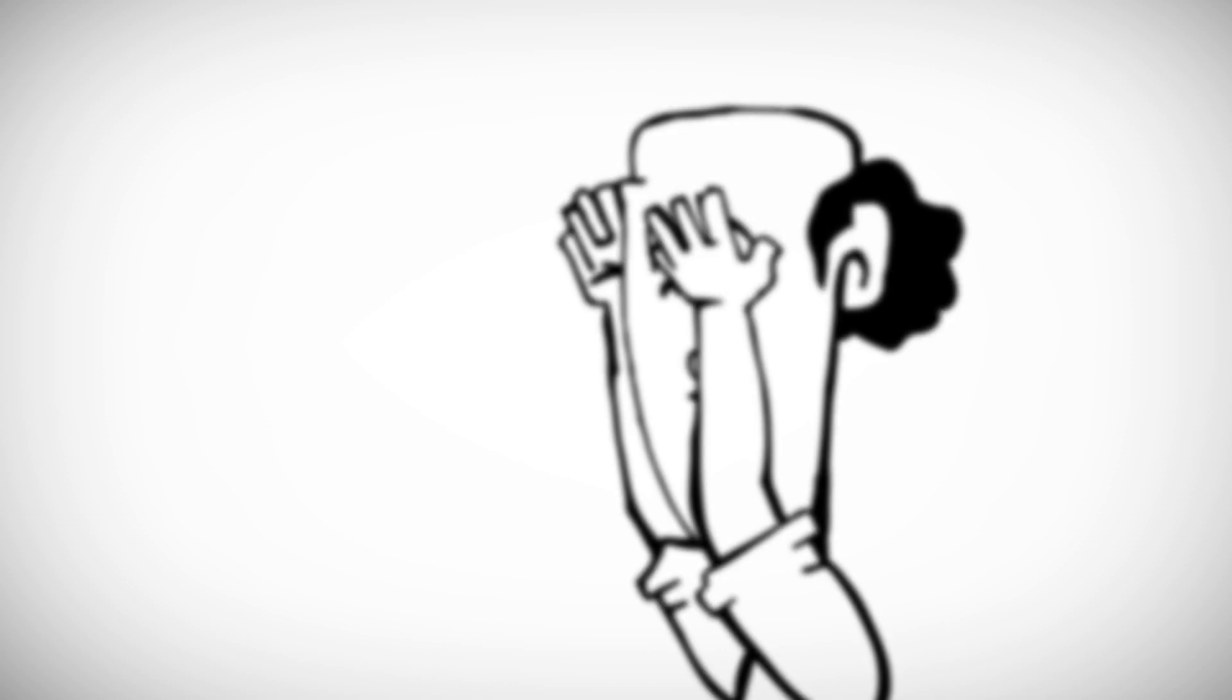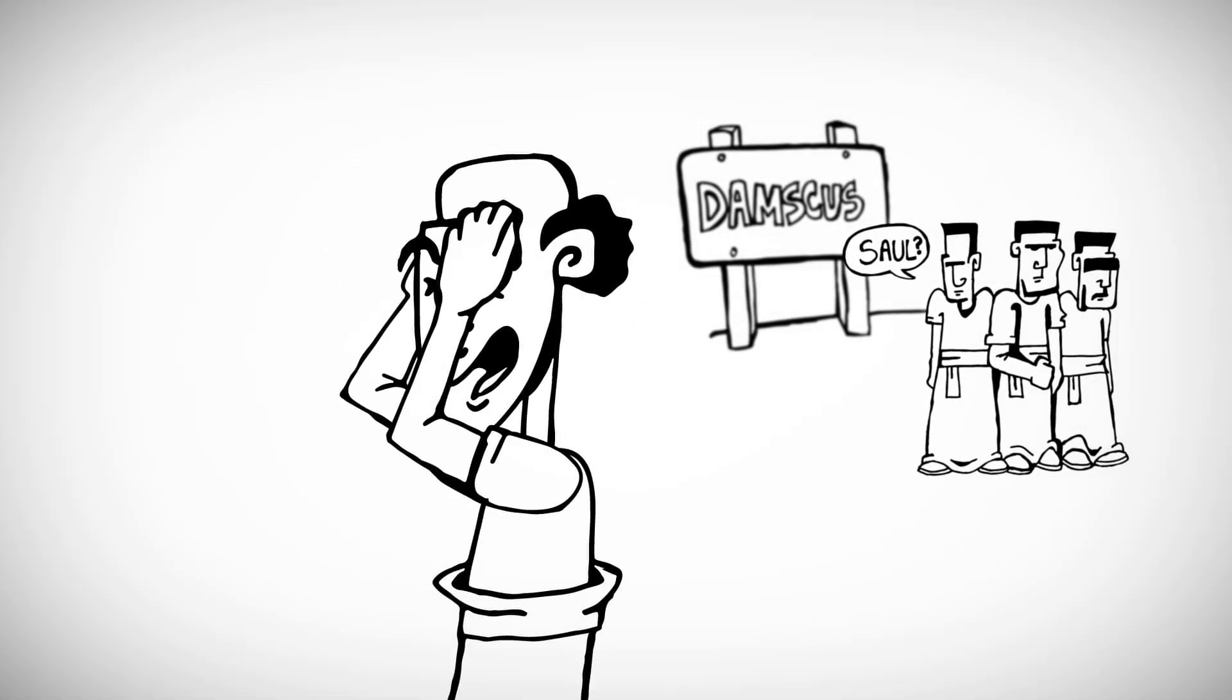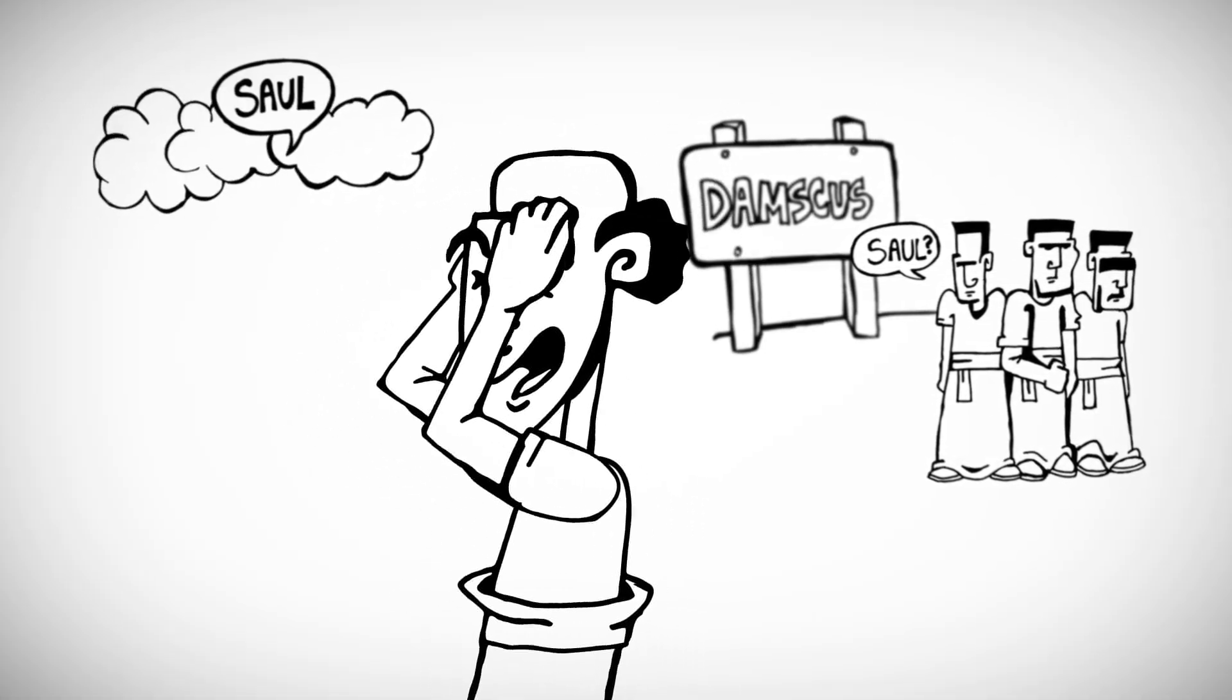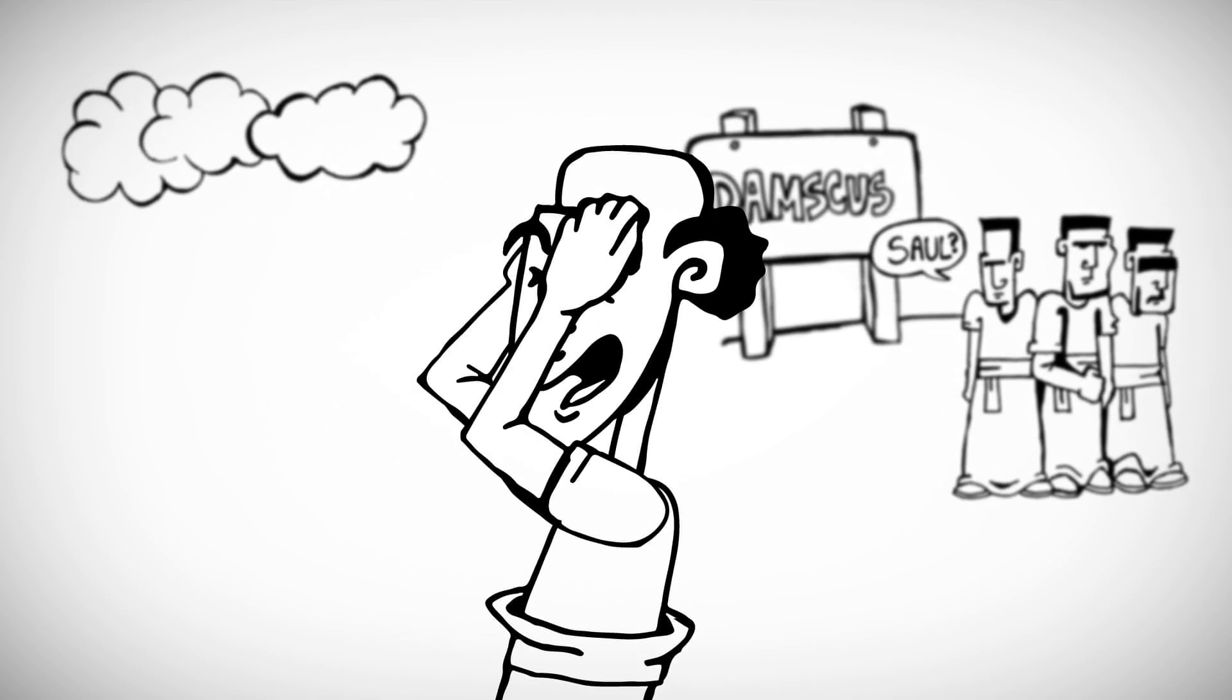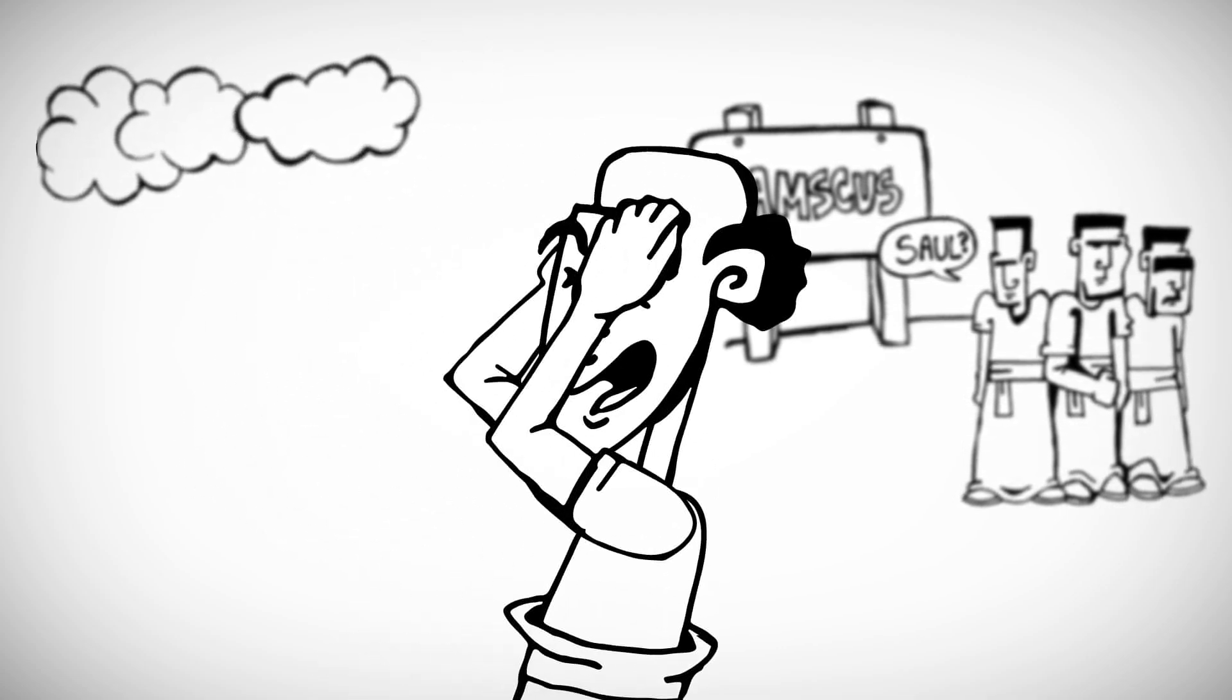They were being punked, weren't they? Saul fell to the ground. It was no joke. When he stood up, something even crazier happened. He was suddenly blind. Was it the flash that he saw? No, his thugs could see just fine.